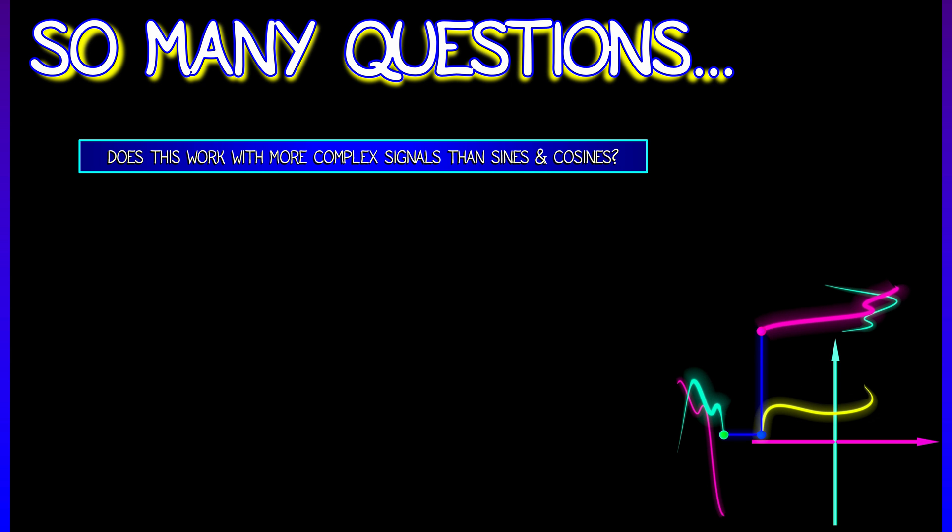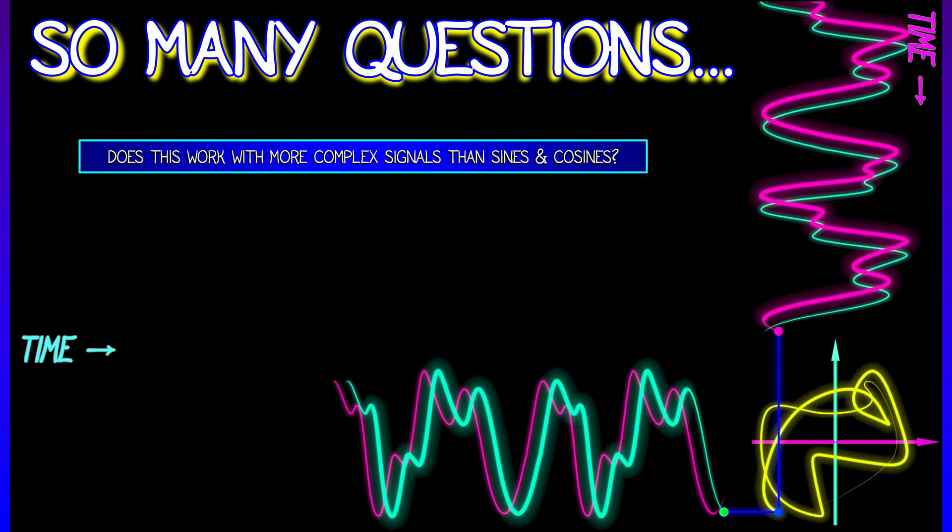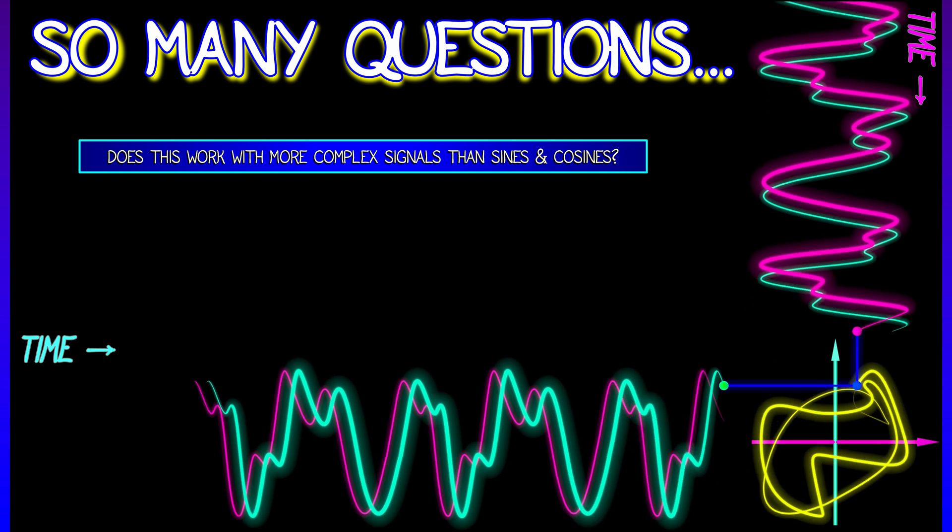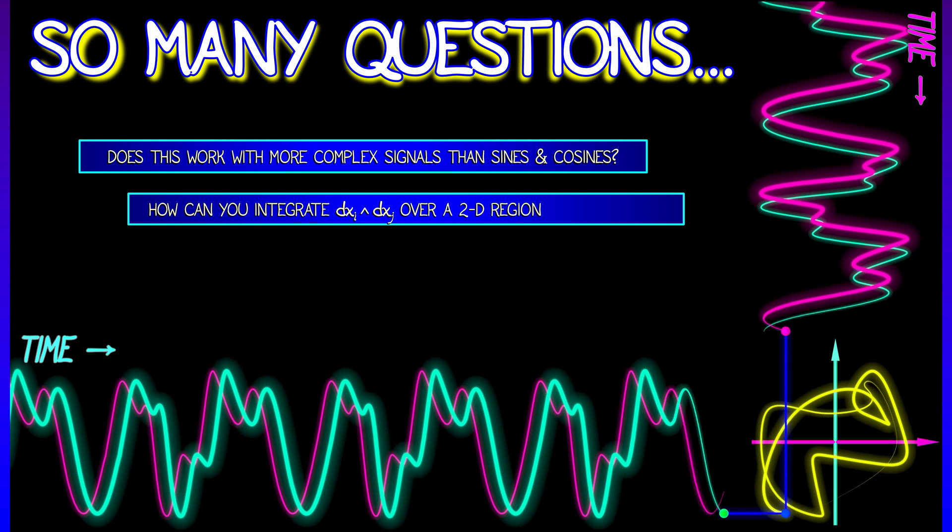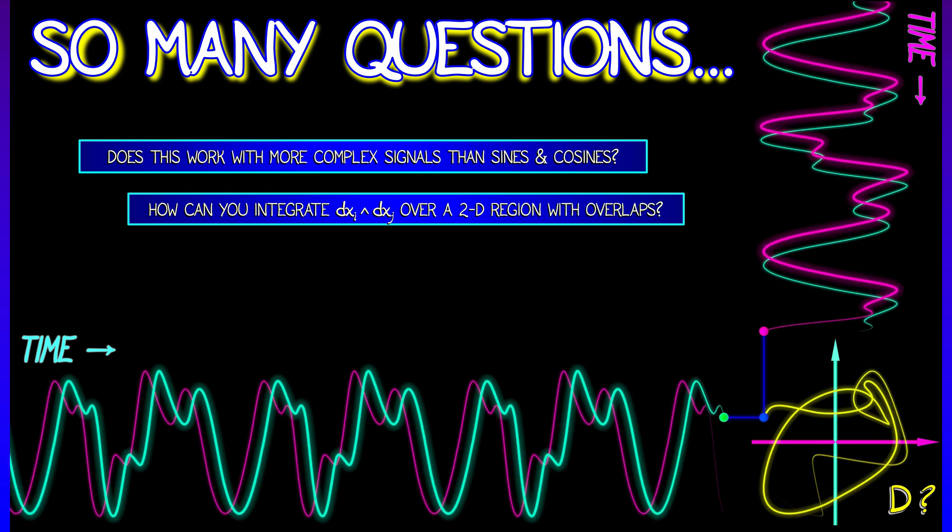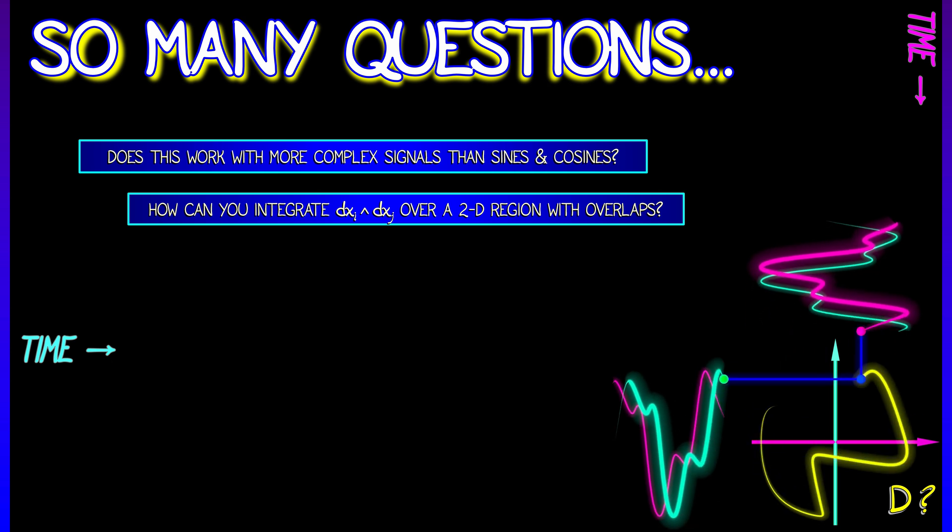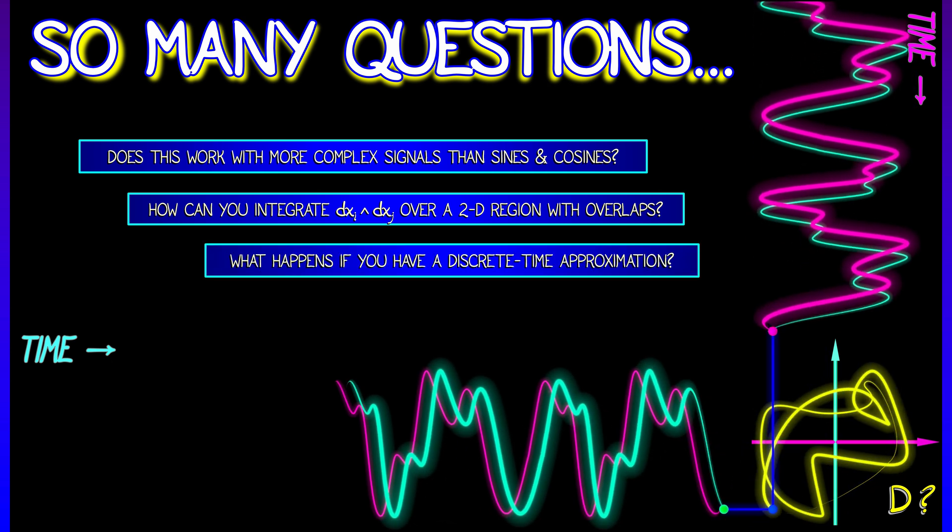What happens if we have more complicated signals? Things that aren't just sines or cosines, but really complicated, rich signals, the kinds of things you would find in practice? Well, these are going to trace out really weird regions in the xi xj plane. What does it mean to integrate a two-form over something like that?